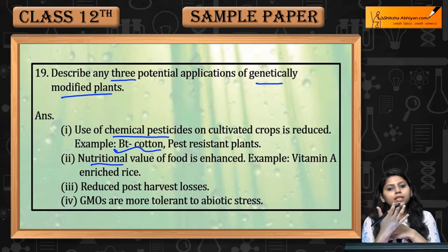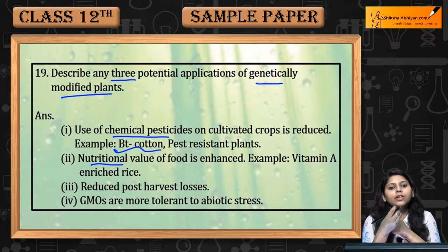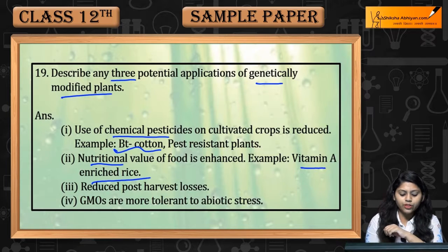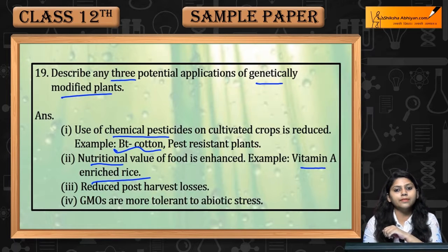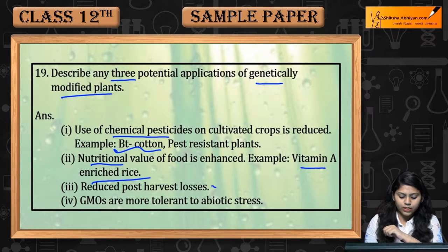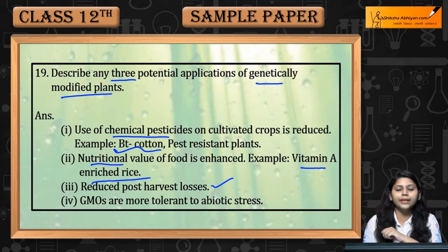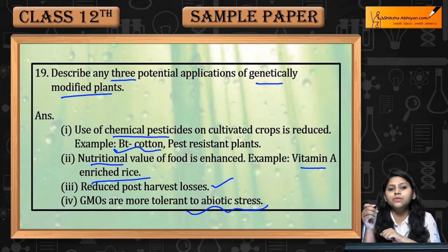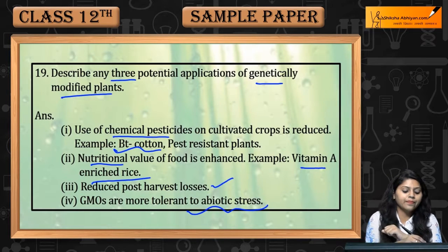Genetically modified plants have higher nutritional values. An example is vitamin A enriched rice. Additionally, post-harvest losses are reduced because these plants are more tolerant to abiotic stresses.